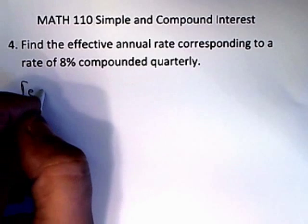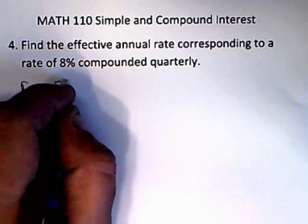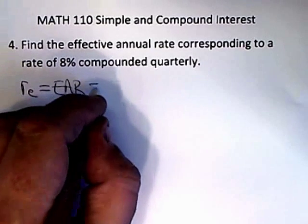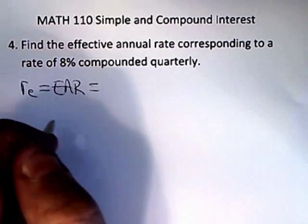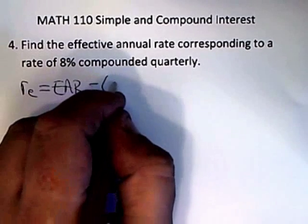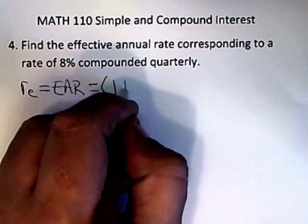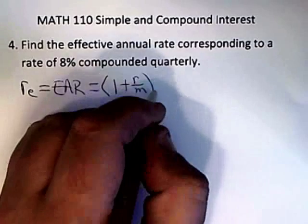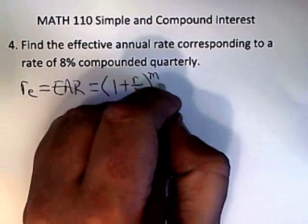I'm going to use R sub E for effective annual rate. Sometimes I call it EAR for effective annual rate, but in any case, whatever you call it, to calculate the effective annual rate, you take the quantity 1 plus R over M, raise it to the M power, and subtract 1.